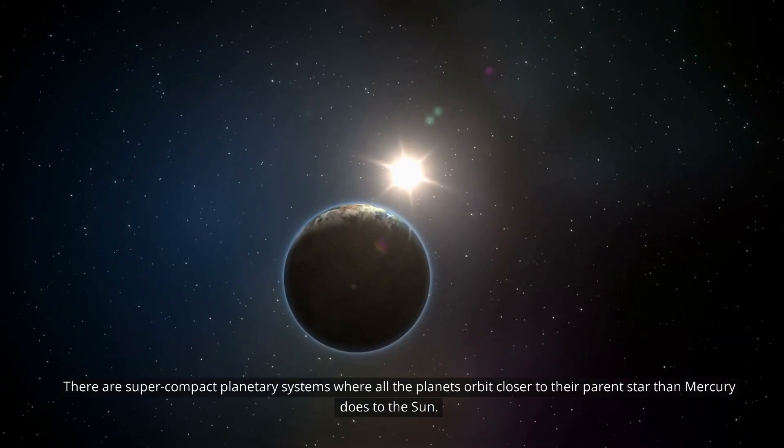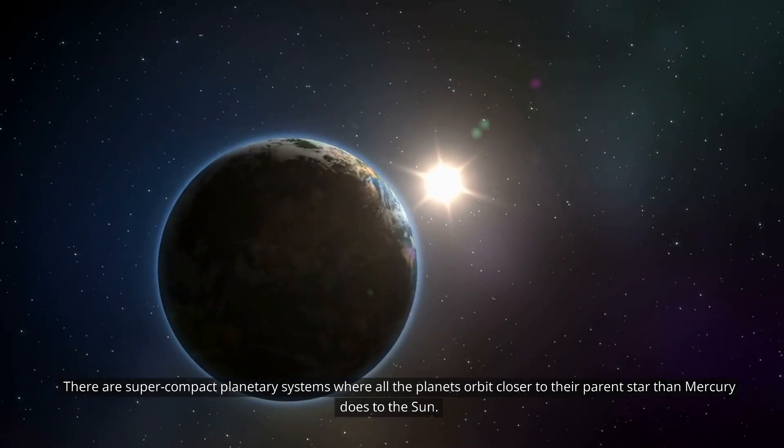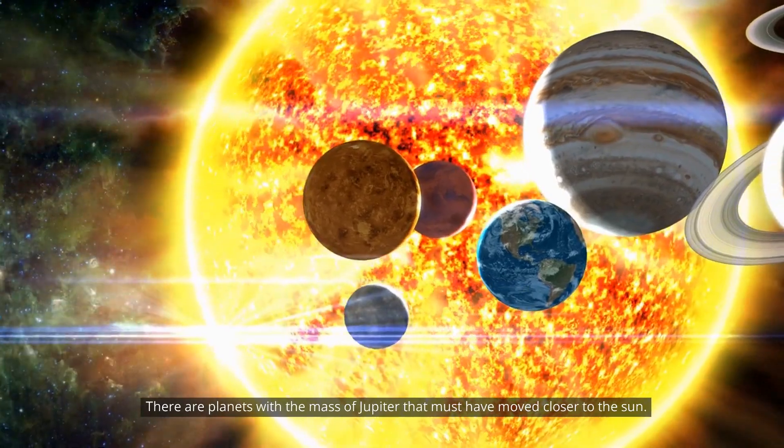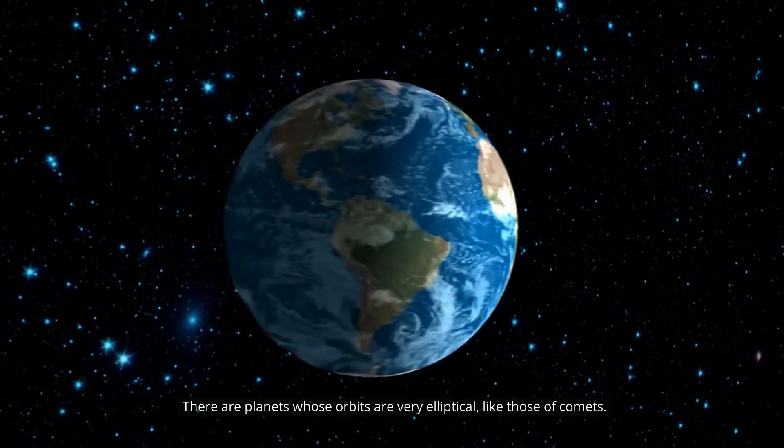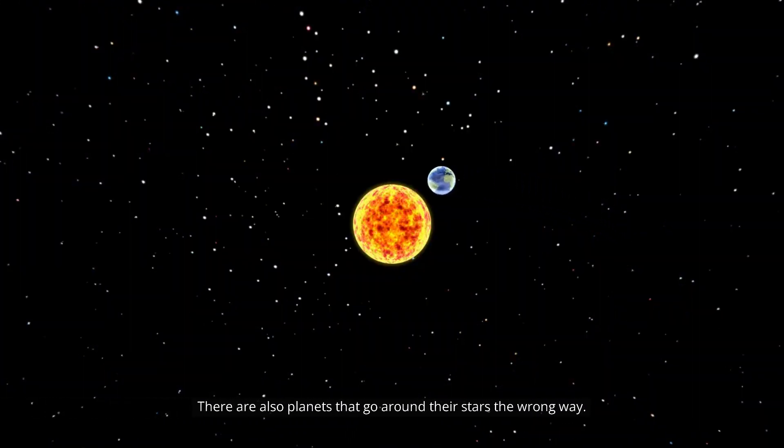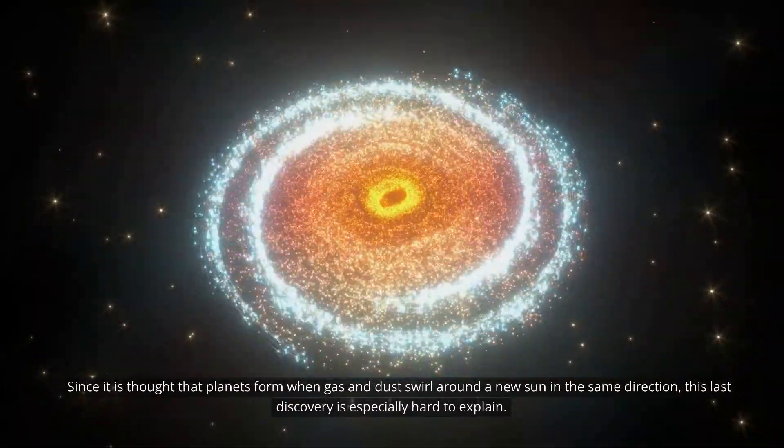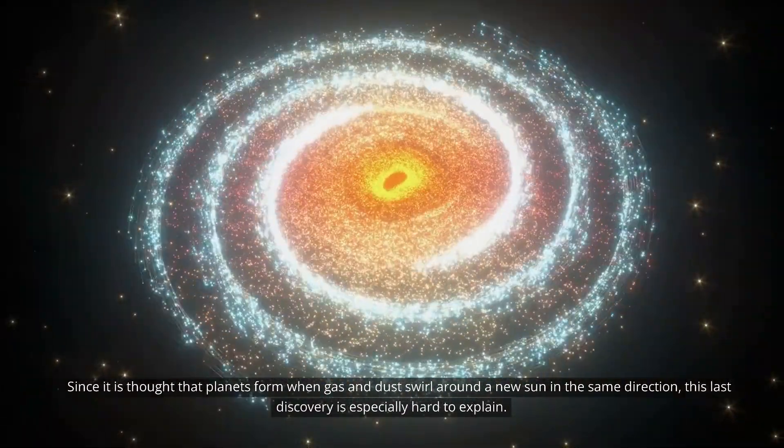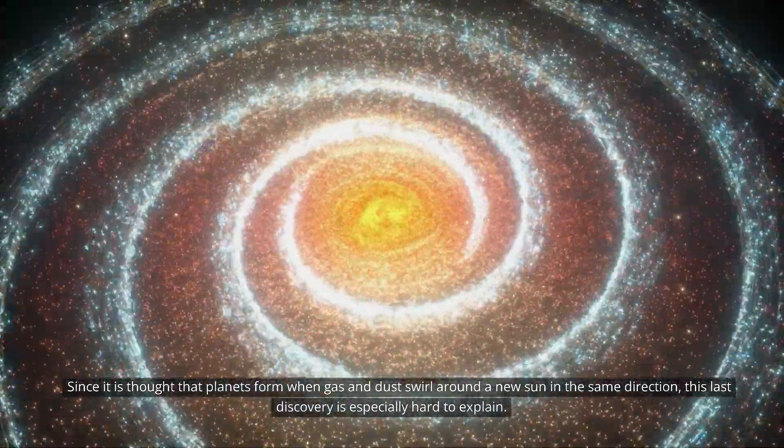There are super-compact planetary systems where all the planets orbit closer to their parent star than Mercury does to the Sun. There are planets with the mass of Jupiter that must have moved closer to the Sun. There are planets whose orbits are very elliptical, like those of comets. There are also planets that go around their stars the wrong way. Since it is thought that planets form when gas and dust swirl around a new Sun in the same direction, this last discovery is especially hard to explain.